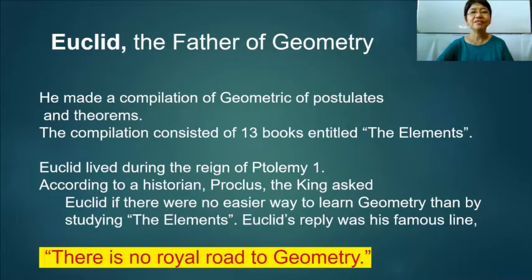Euclid is hailed to be the father of geometry. He made a compilation of geometric postulates and theorems. And this compilation consisted of 13 books entitled The Elements.